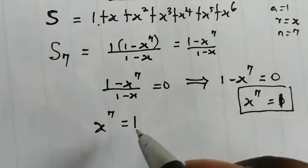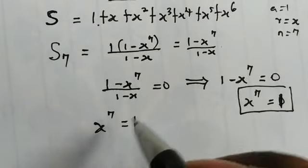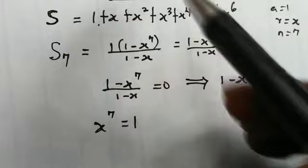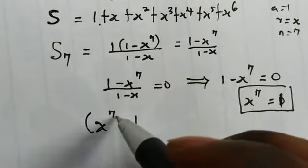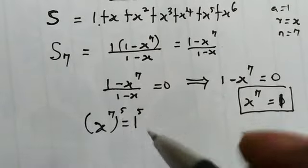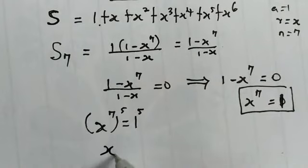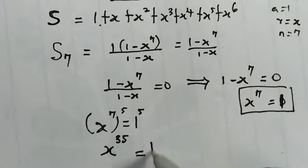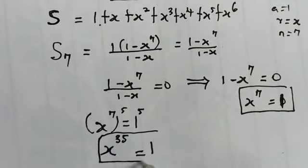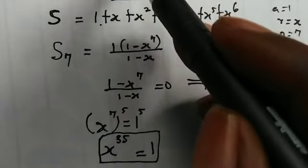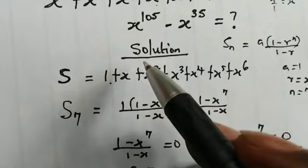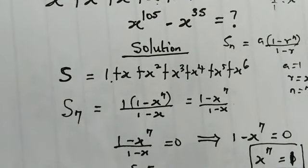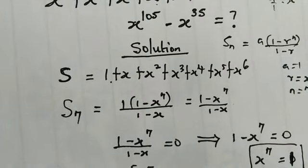Now, let us raise both sides to the power of 5, because we have 35 in our expression. Raising both sides to the power of 5, we get x to the power of 7 times 5, which is x to the power of 35, equal to 1 to the power of 5, which is 1. Now for 105: 105 divided by 7 is 15.